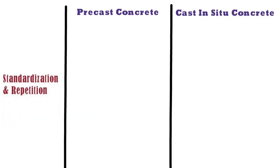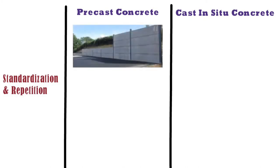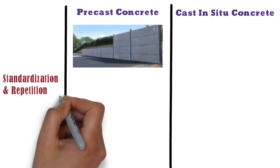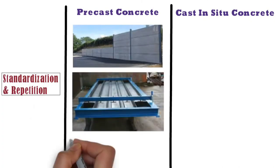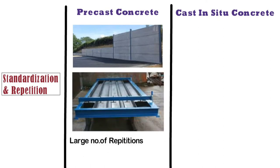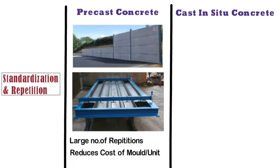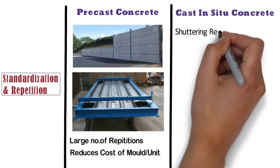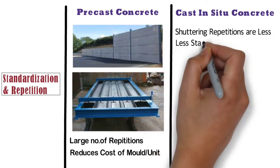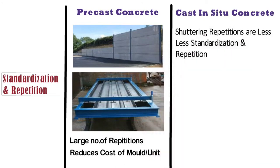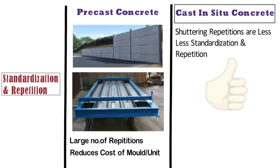In case of the precast method, for repeated similar pieces like walls on a high-rise building, there is greater potential for standardization and repetition. The mould for precast components can be used for a large number of repetitions, thereby reducing the cost per unit. Whereas in case of cast in situ concrete, the repetitions of shuttering are very less. So if limited standardization and repetition occurs, then the cast in situ method will be more beneficial.